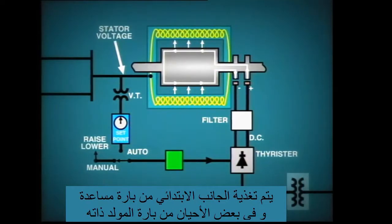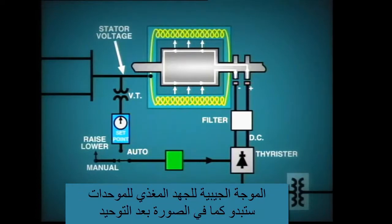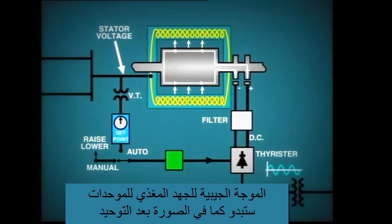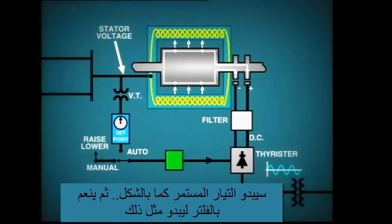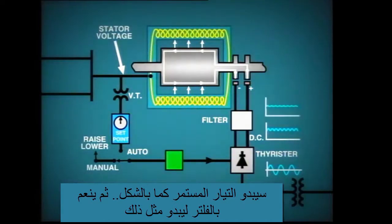The primary side of this transformer is fed from an auxiliary bus, or in some cases the generator bus itself. The sine wave for the incoming three-phase AC voltage, which is applied to the rectifier, will look like this. After rectification, the DC output can be represented by this curve, and this may be further smoothed to look like this.